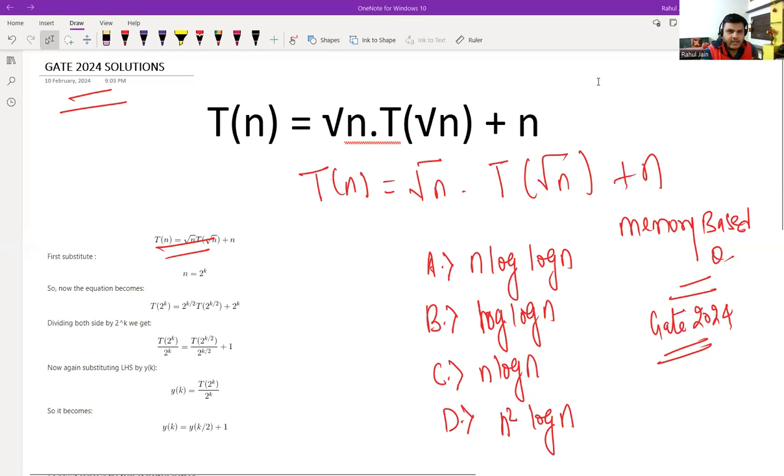Hello everyone, I hope you all are doing very well. One question that we got from our student on the memory-based questions asked in GATE 2024 today's exam was like this, where the recurrence relation was given T(n) equals square root n times T(square root n) plus n, and four options were there.